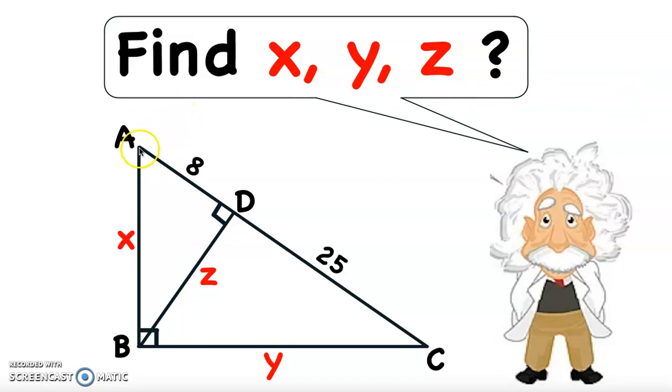Welcome to SuperZMath. Given the right triangle ABC, BD is the height, AD equal to 8 units, DC 25 units. We need to find the lengths of AB, BD, and BC.